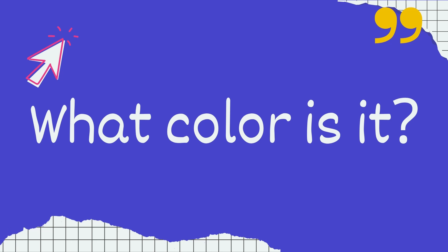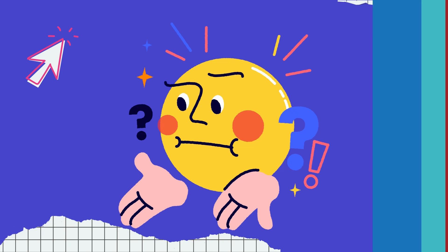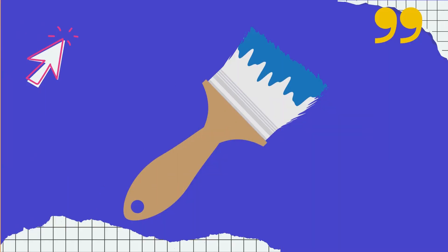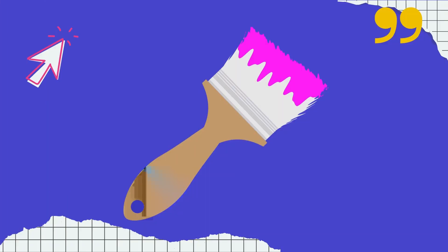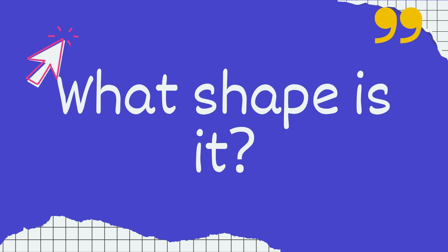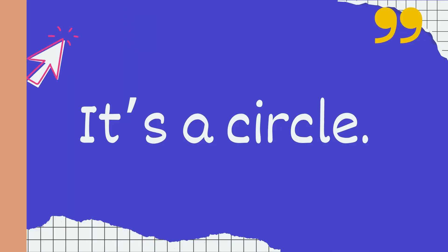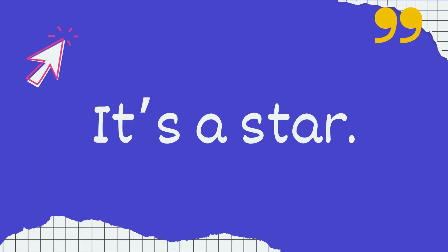What color is it? It's blue. It's pink. What shape is it? It's a circle. It's a star.